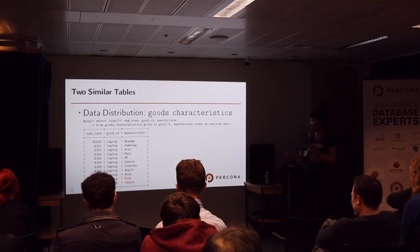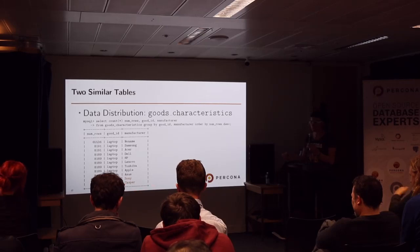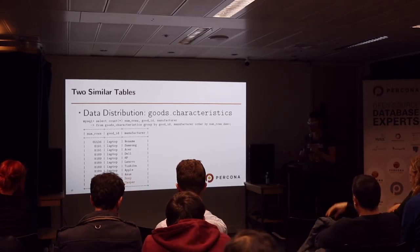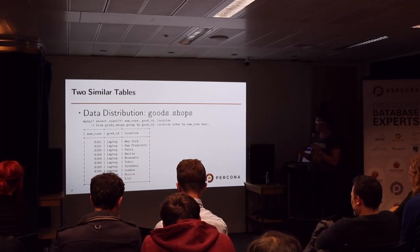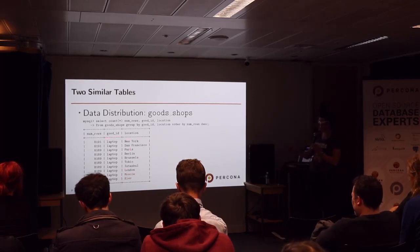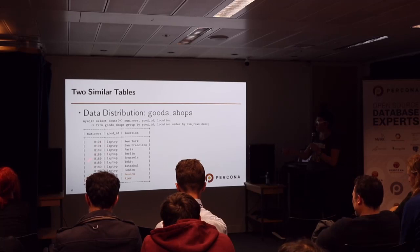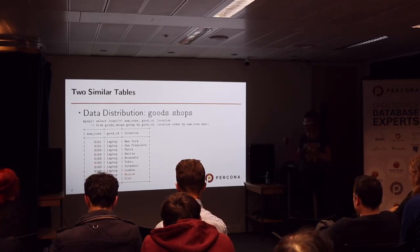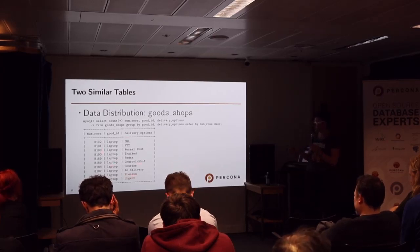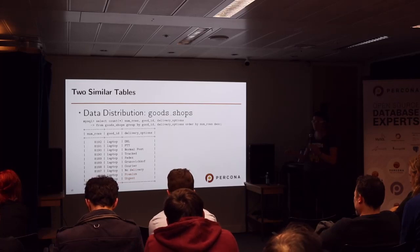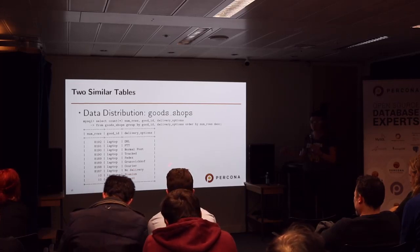We have some popular companies, but Sony stopped producing laptops so there are only 10 Sony laptops. There's a local Turkish company whose laptops we don't sell in London shops. For shops, it's the same story — some shops have a lot of laptops, while the Moscow and Kyiv shops sell something else, not laptops. Delivery options: we have premium options that aren't for laptops, they're for something else. This demonstrates severely skewed data distribution.